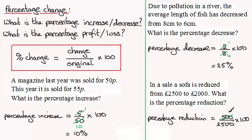And I can see this one cancels very nicely. £500 will go into £500 once, and £500 will go into £2,500 five times. So we end up with 1 fifth of 100, or 100 divided by 5. And that is 20, 20%.